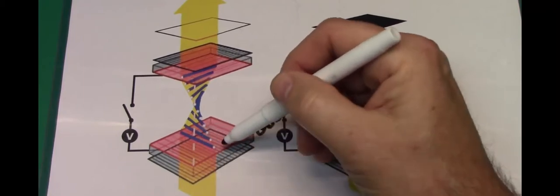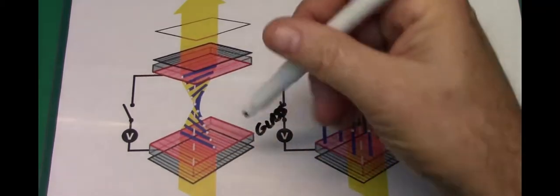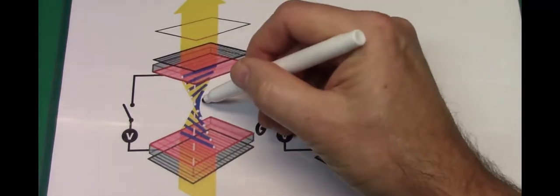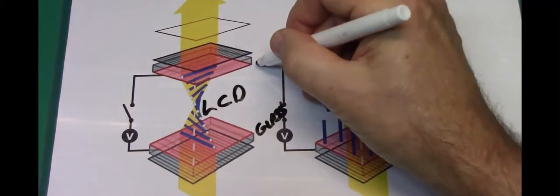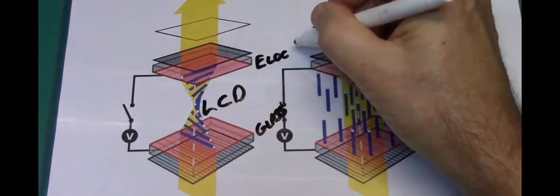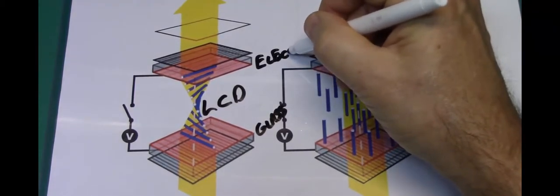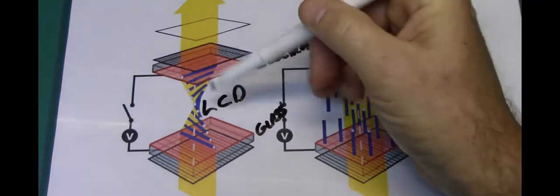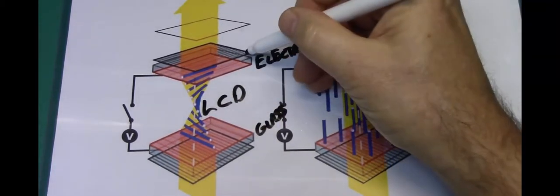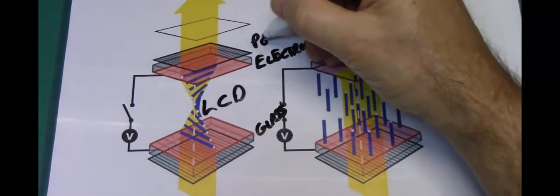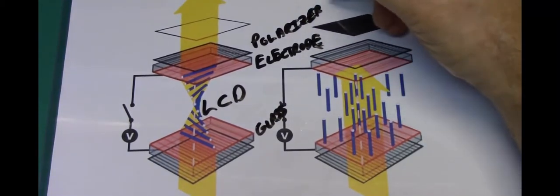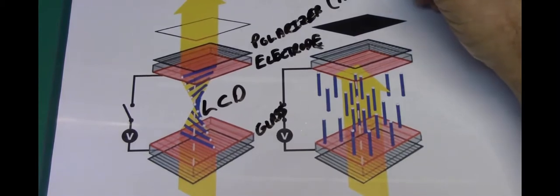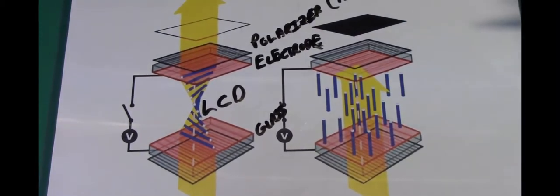So by applying voltage to this we can actually put a charge on it. Above that we have the liquid crystal itself, a material that's somewhere between a liquid and a solid. We have another electrode but this one's going to have the opposite charge of the one below it. And then we have another polarizer but this polarizer is actually called the analyzer. And then of course we have the display itself.